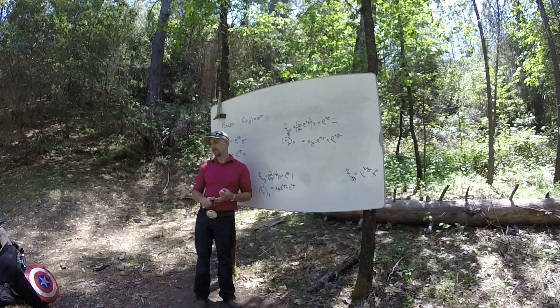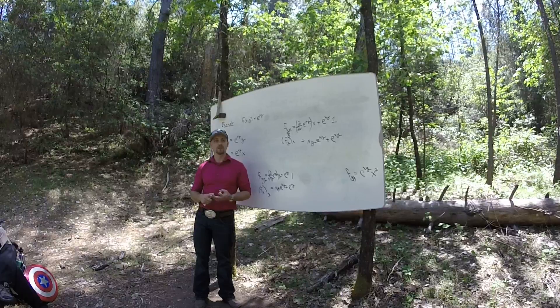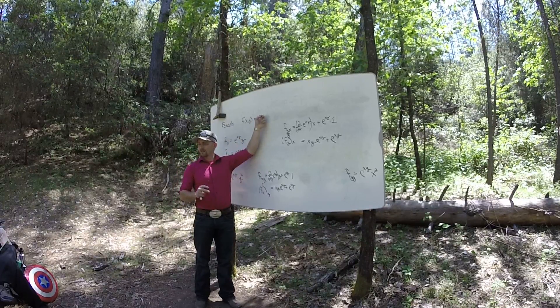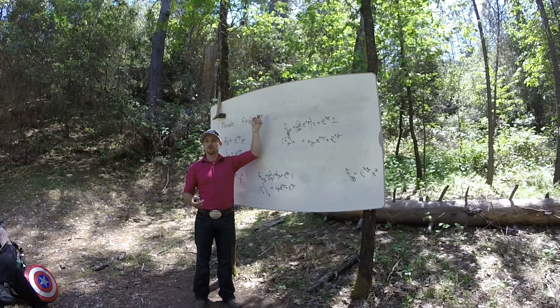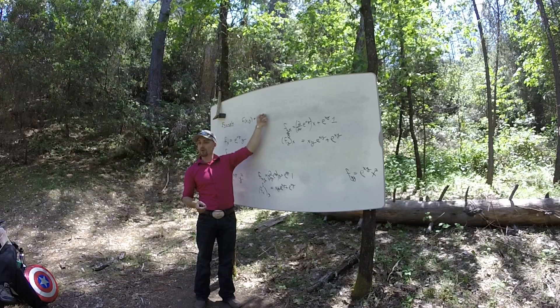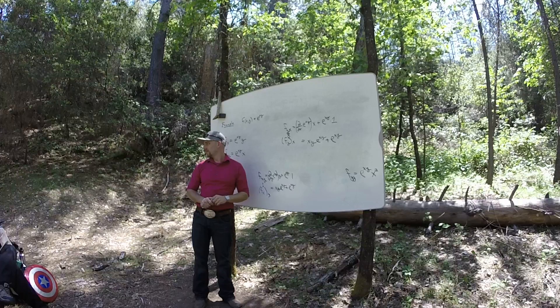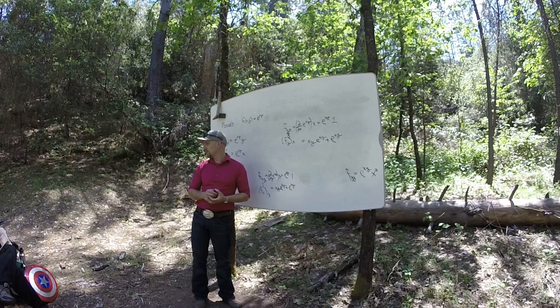And sums of continuous functions, and products of continuous functions are continuous. So this thing is a product of two continuous functions, right? x is continuous, y is continuous. I'm multiplying them together, so I get a continuous thing. And then I'm putting that in the exponent of an e. So that's composition, right? With a continuous function, e to the whatever.